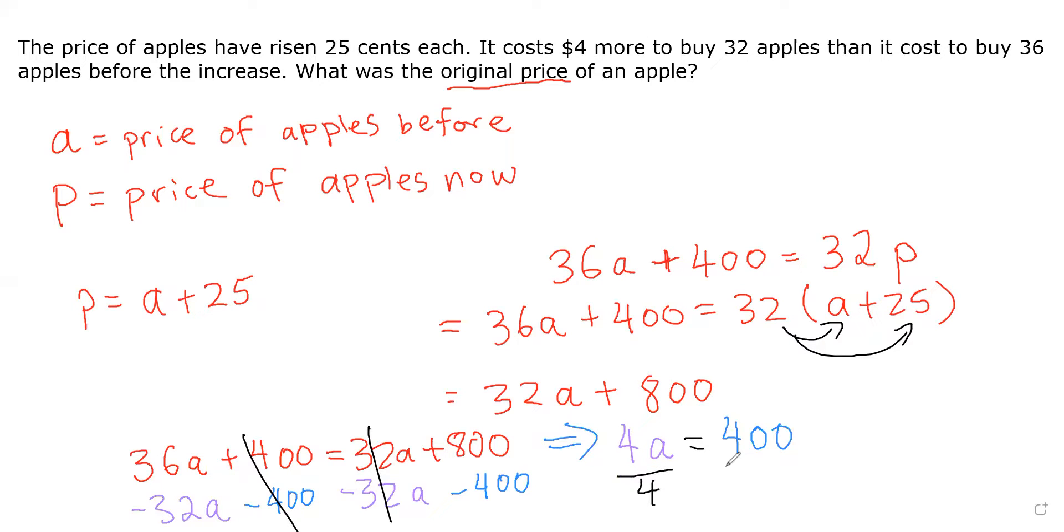Now if I just divide by 4 on both sides, what do we get A to be equal to? A is equal to 400 divided by 4, which is 100. And this is cents. So the original price of an apple is 100 cents, or it's one dollar. And that is it. Thank you.